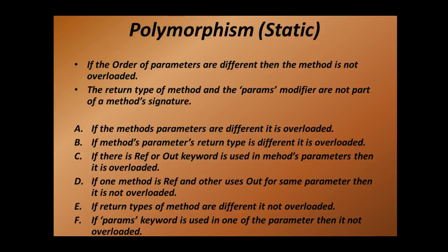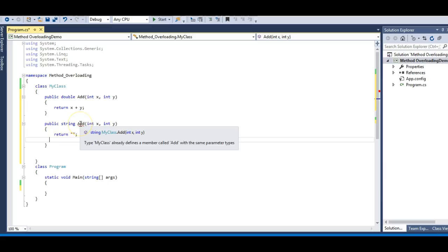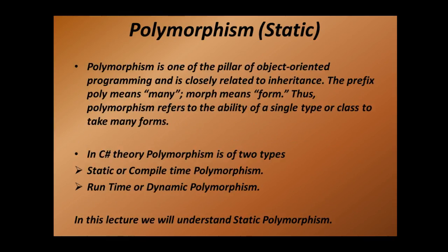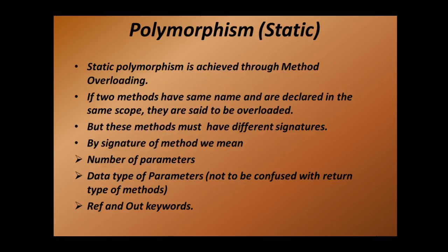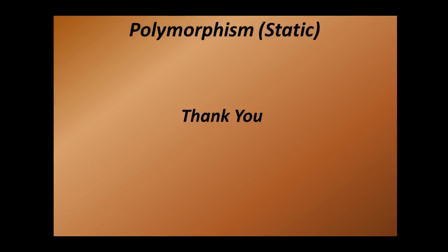This is called compile time polymorphism because at compile time we already know which method we will be invoking — we are aware of any method errors at compile time itself, and we don't get any errors at runtime. Therefore it is called compile time polymorphism or static polymorphism. That's all for this lecture — thank you for listening and all the best for your interviews.